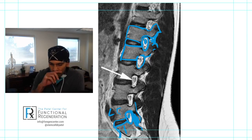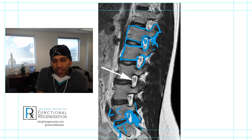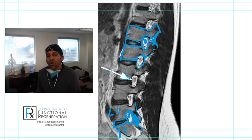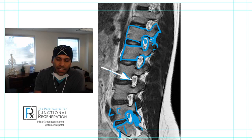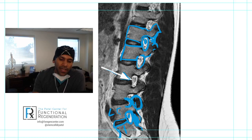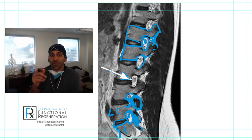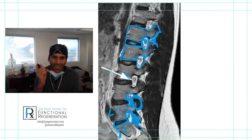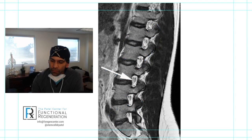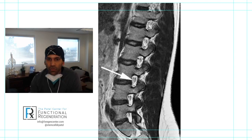In between the facet joint and the discs is the hole where the nerves exit. That hole can get narrow when we have a disc bulge, or if the facet is getting arthritic and getting bigger — that can cause narrowing of where the nerve is traveling, which is called foraminal stenosis. The hole is called the foramen; stenosis refers to narrowing.